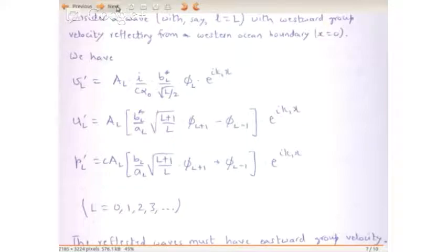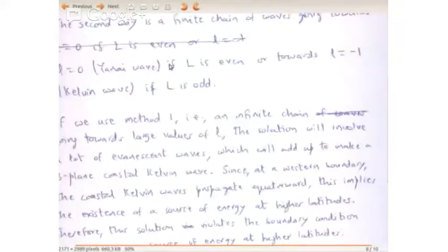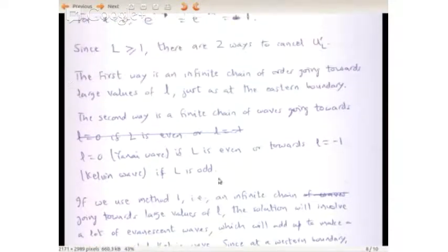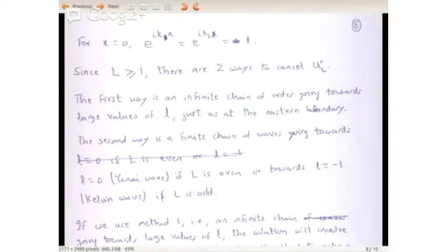Since L is greater than or equal to 1, there are two ways to cancel U capital L prime. The first way is an infinite chain going towards large values of L — cancelling phi_{L-1}, then phi_{L+1}, phi_{L+3} and so on, just as at the eastern boundary we cancelled phi_0, then phi_2, phi_4 and so on. The second way is a finite chain going towards L equals 0, the Yanai wave, if capital L is even, or towards L equals minus 1, the Kelvin wave, if L is odd.